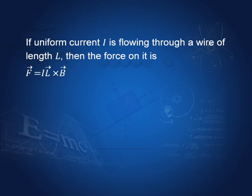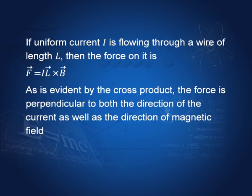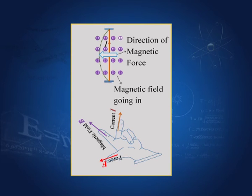If the current is uniform flowing through a wire of length L, then the force on it is F equal to I L cross B. We have dF equal to I dL cross B. If I is constant throughout the length of the wire, then it becomes I L. If the length is going up and B is the magnetic field going in, you can work out by the right hand screw rule that the force is in the corresponding direction.